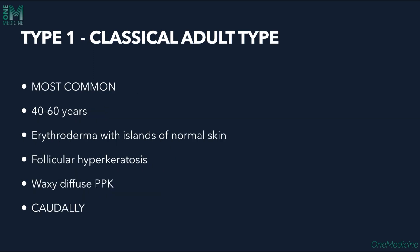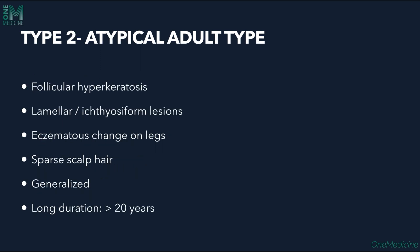Type 1, the classic adult type, is the most common type presenting from 40 to 60 years. Features include erythroderma with islands of normal skin called nappes claires, follicular hyperkeratosis, waxy diffuse palmoplantar keratoderma, with lesions spreading caudally from the scalp downwards. Type 2, the atypical adult type, shows follicular hyperkeratosis with lamellar or ichthyosiform lesions and eczematous changes on the legs, sparse scalp hair, and is of very long duration — over 20 years.